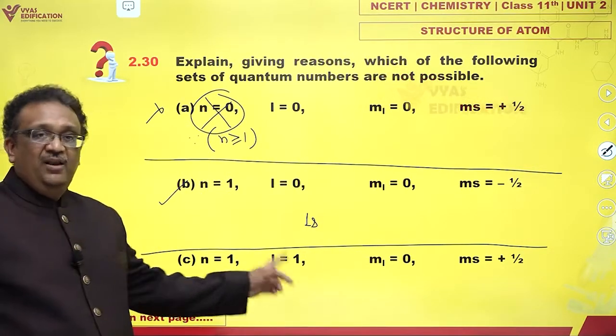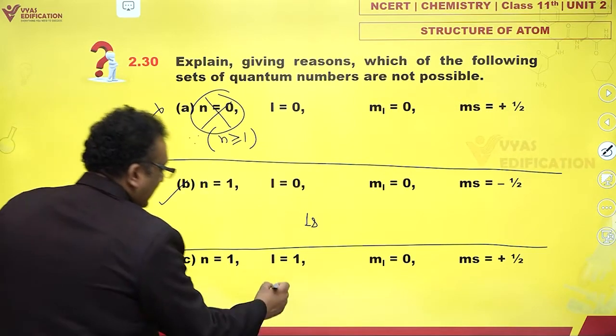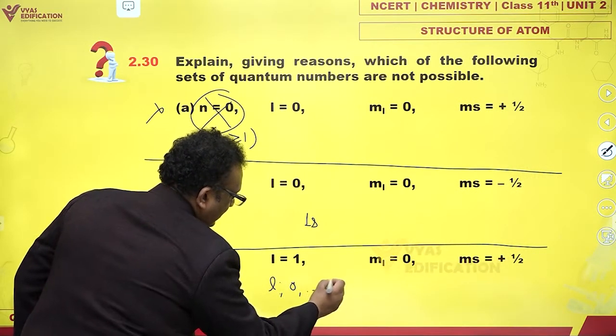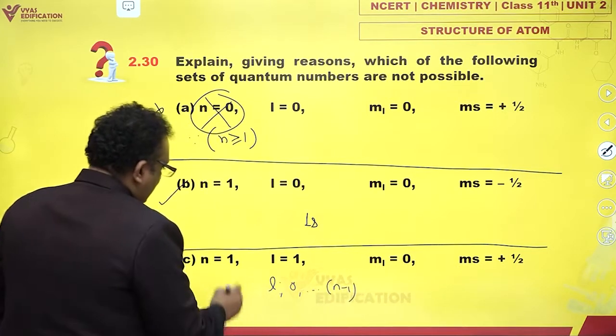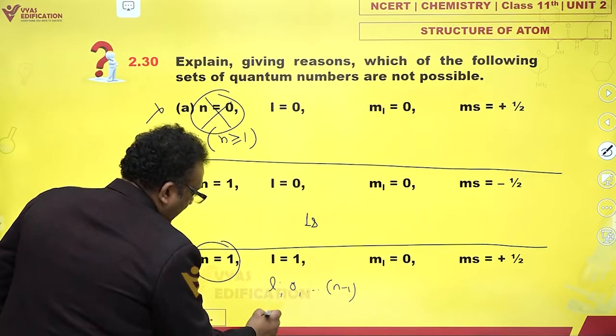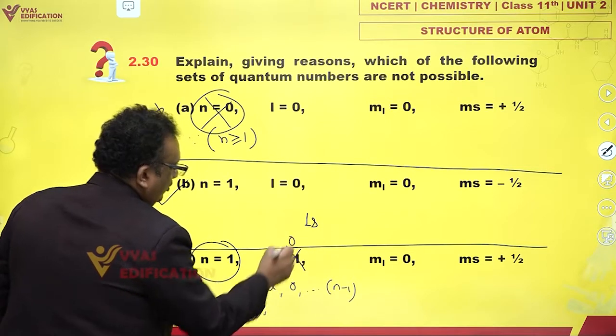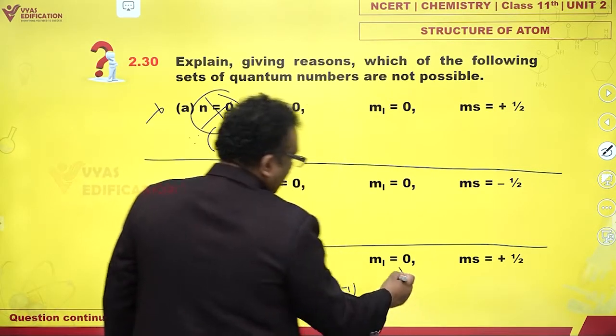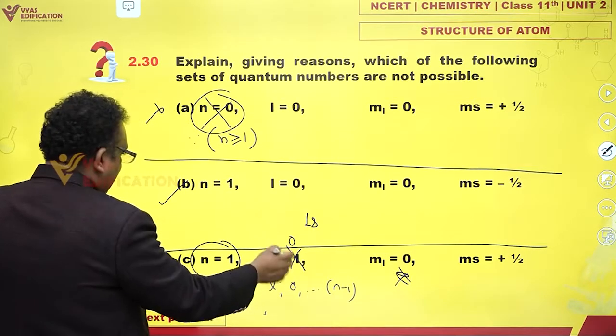n equals 1, l equals 1. Now this is bad. L can have values from 0 till n minus 1. So for n equals 1, l can only have a value of 0, which is 1s. So l is wrong here.